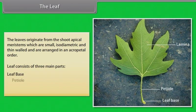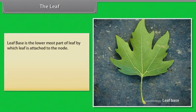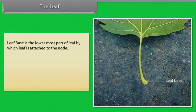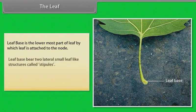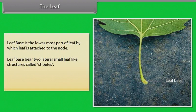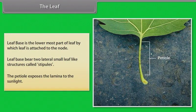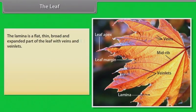Leaf consists of three main parts: leaf base, petiole, and lamina. Leaf base is the lowermost part of the leaf by which the leaf is attached to the node. Leaf base bears two lateral small leaf-like structures called stipules. The petiole exposes the lamina to the sunlight. The lamina is a flat, thin, broad and expanded part of the leaf with veins and veinlets.